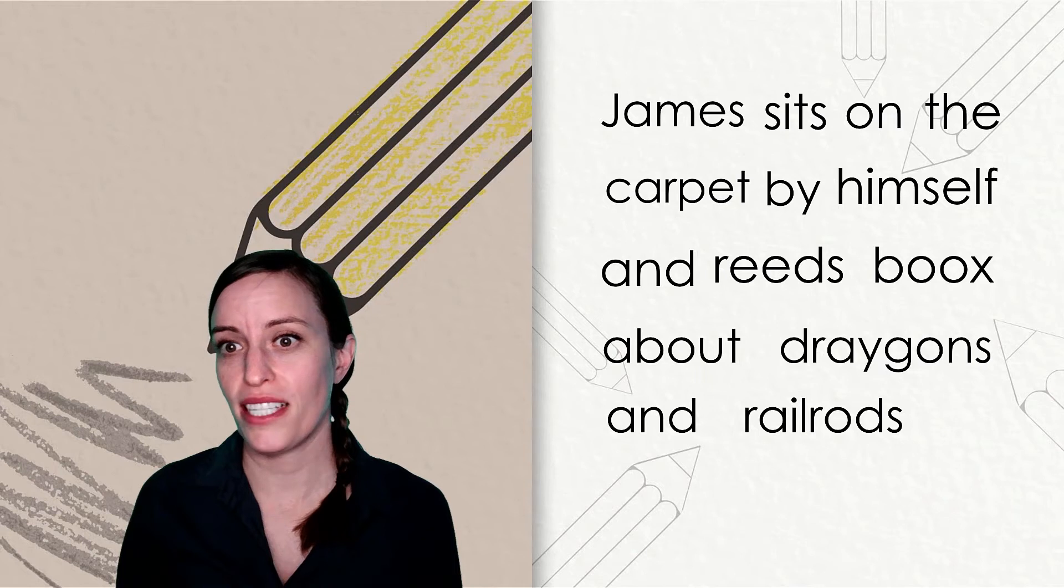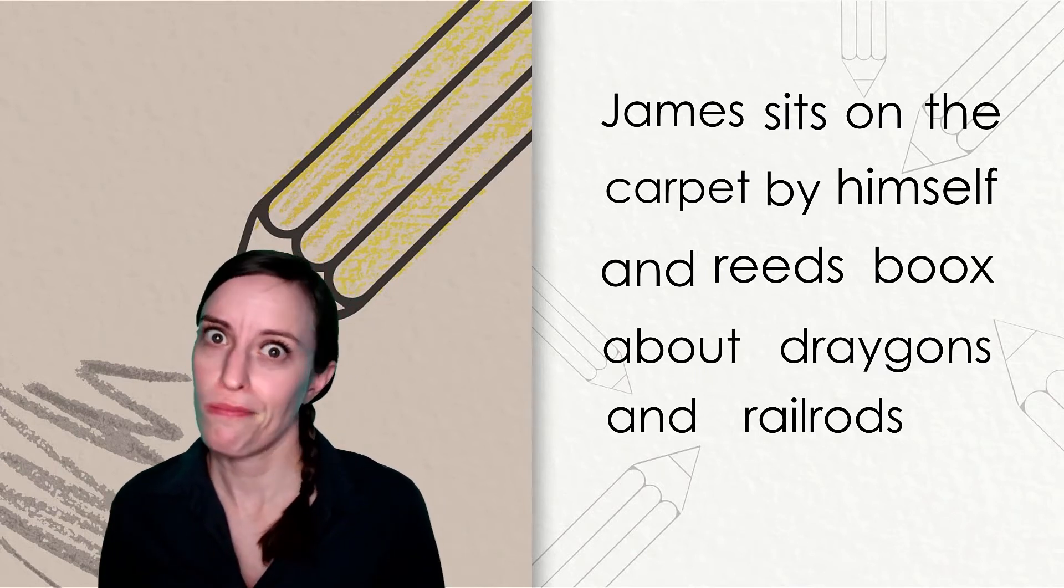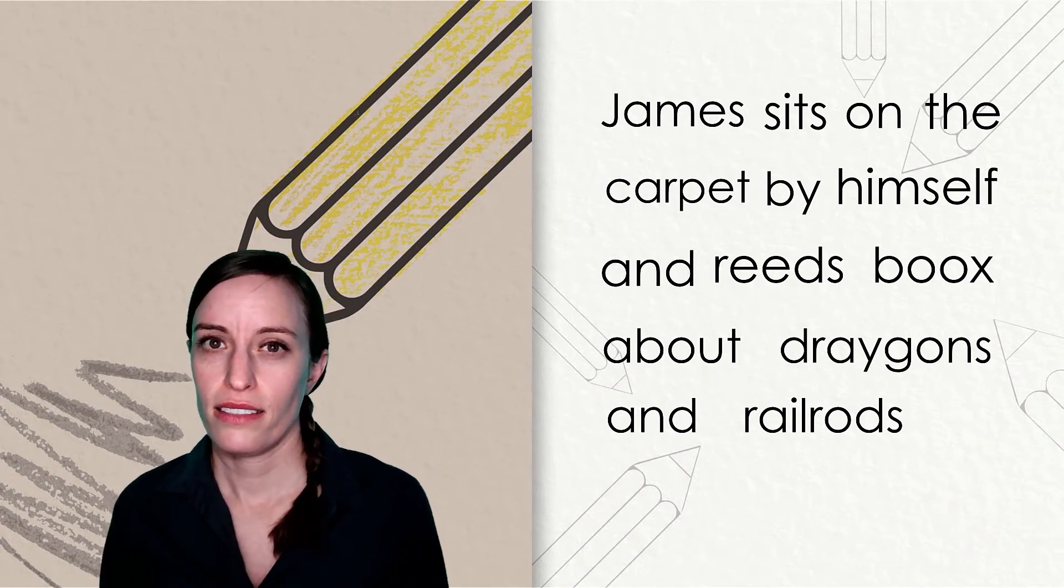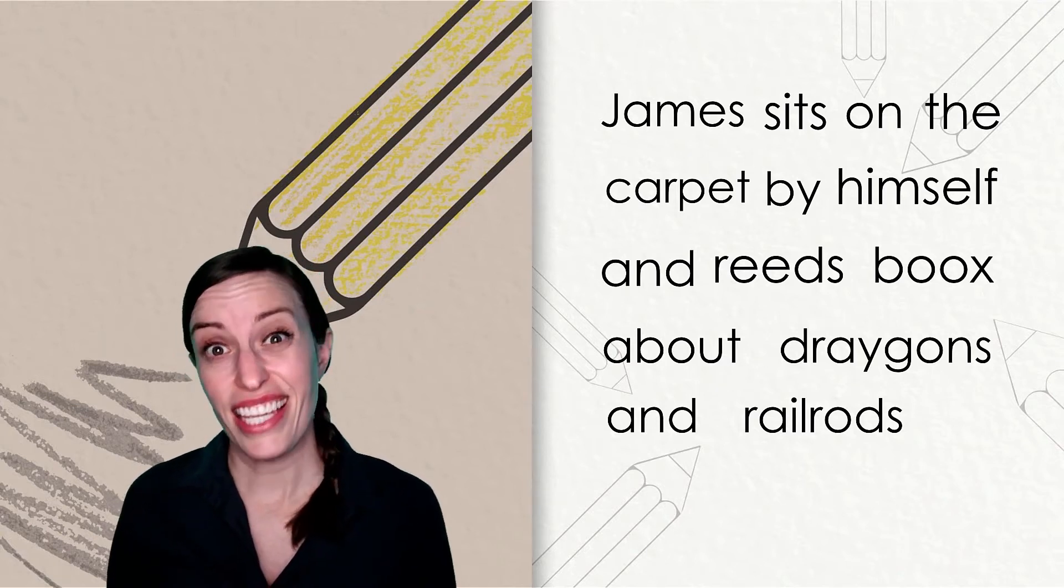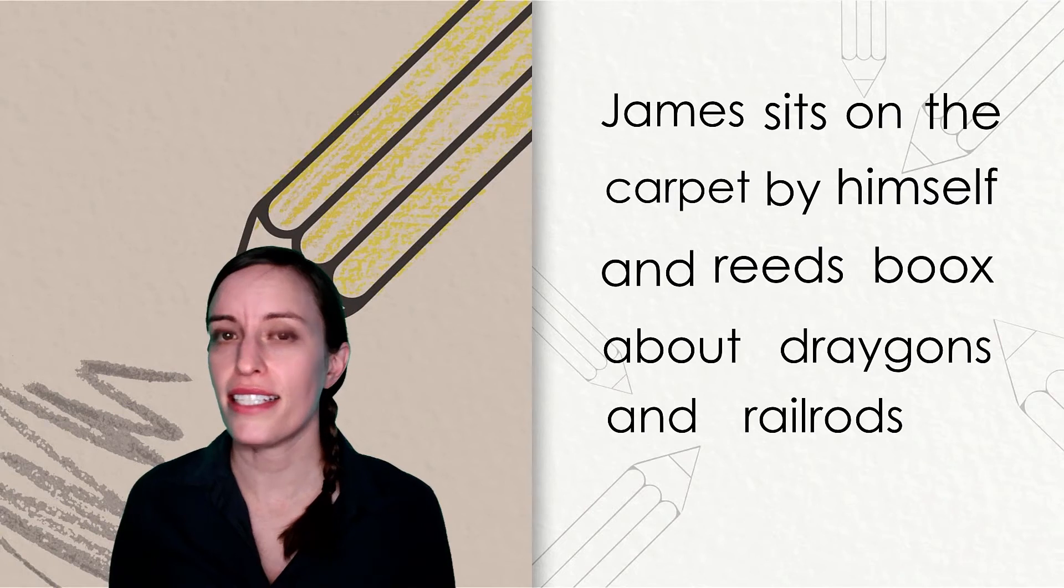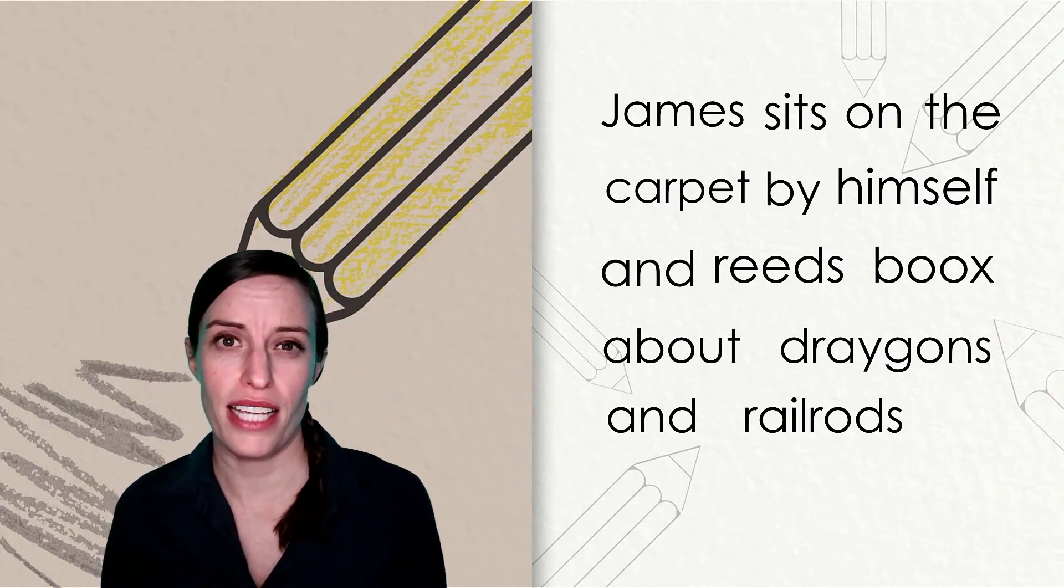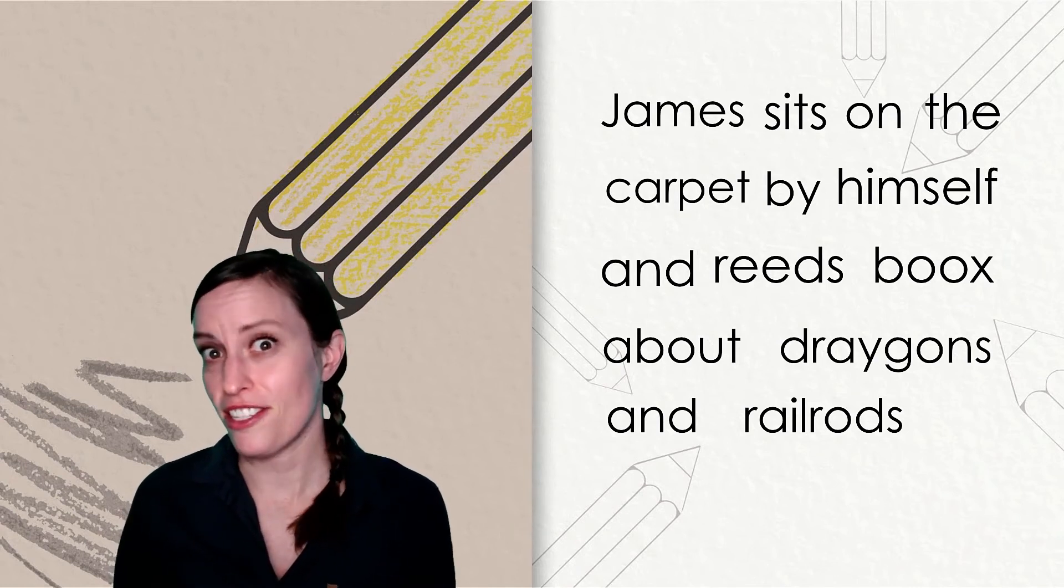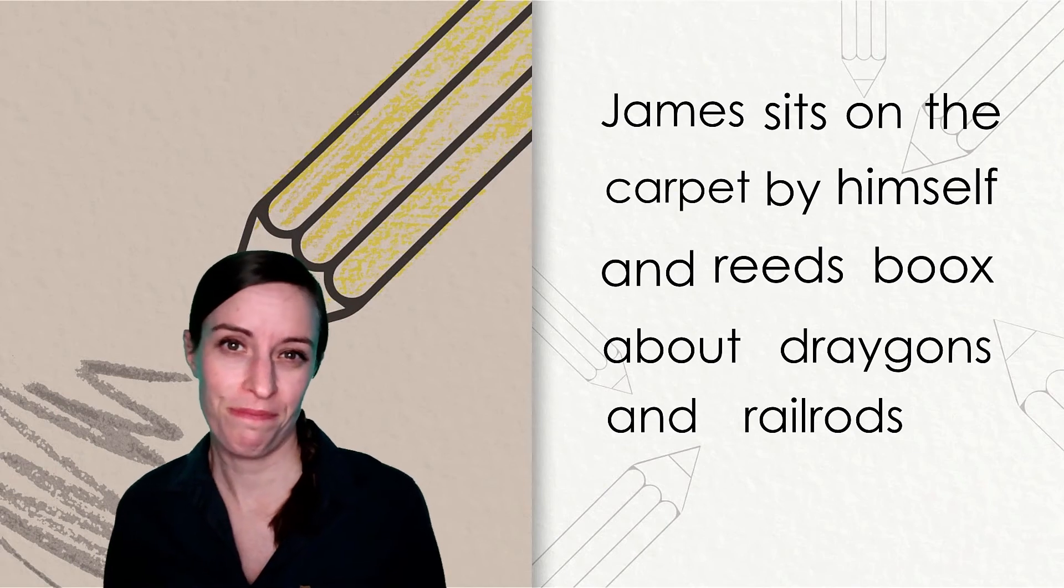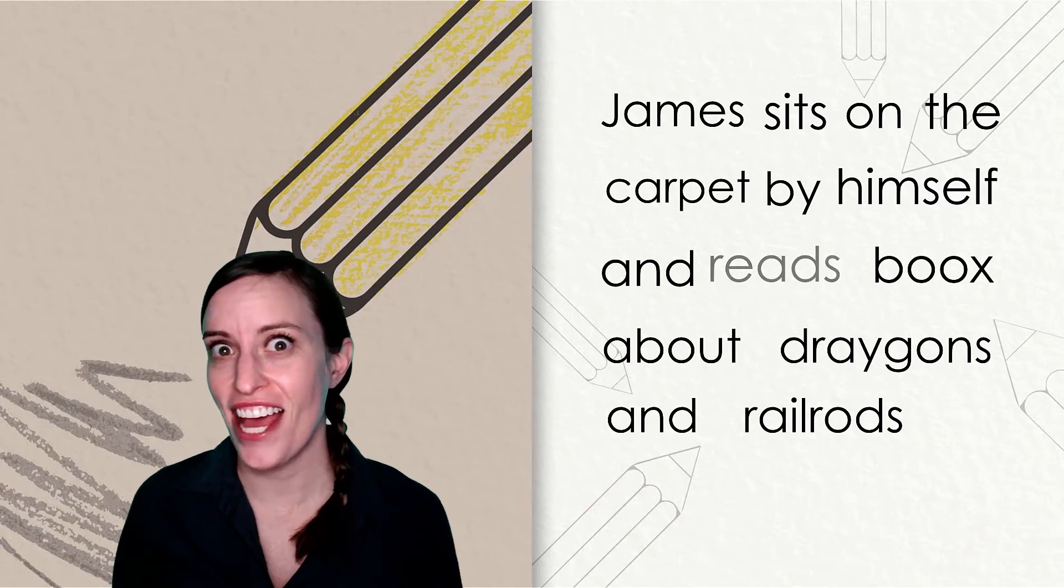Next, we have the high-frequency word himself, and then the word and. Those both look right. James sits on the carpet by himself and reads. You know, the EE vowel team does say E, but we need a different vowel team to make the long E sound in the word reads. Do you know what I need to change the EE to? The EA vowel team. That's correct.